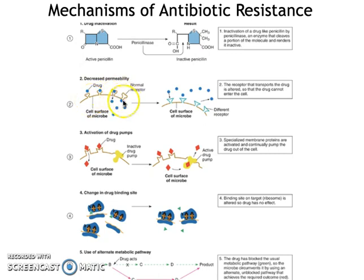These protein transporters are used to transport food or other signaling molecules, and the antibiotic sort of hijacks the system and gets into the cell that way. What the cell can do is change those protein transporters so the antibiotics cannot enter the cell anymore — they are blocked from entering. That's decreased cell permeability: changing the entry points for antibiotics entering the cell.